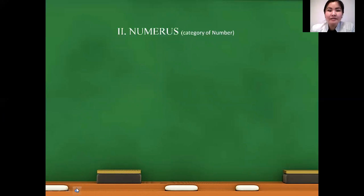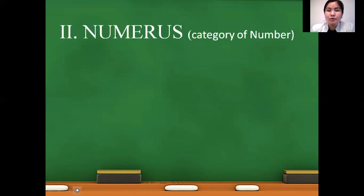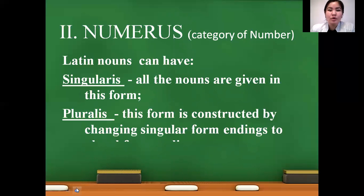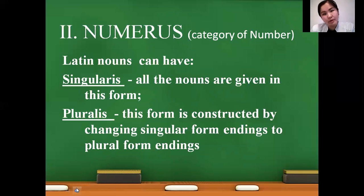According to the second category, numerus — the category of number — nouns can have two numbered forms: singularis, in which all Latin nouns are given, and pluralis. The plural form must be constructed by changing singular endings to plural endings, and today we will discuss this process.